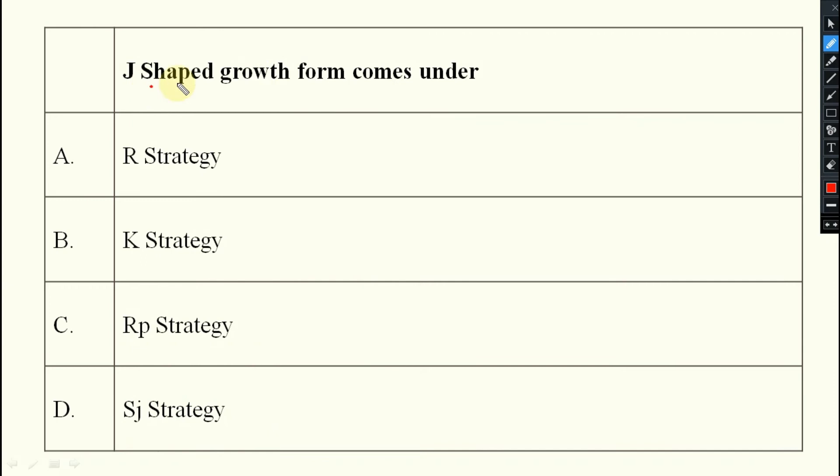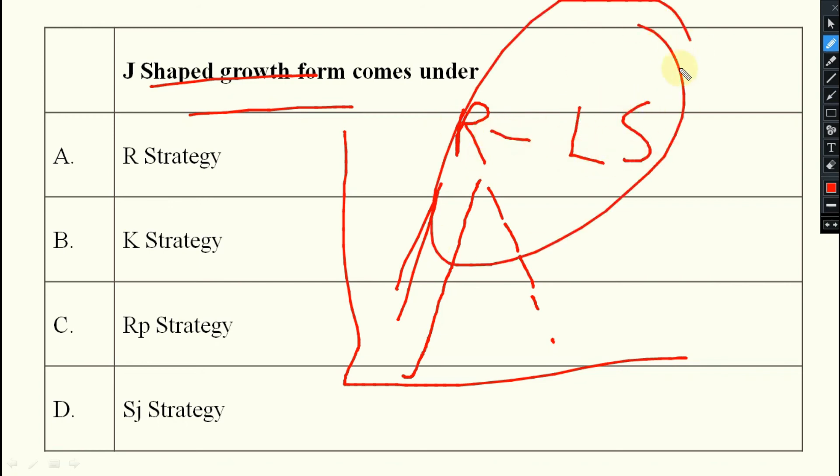J-shaped growth form comes under which one? J-shaped, this is your J-shaped. So here what will happen? High reproductive rate and low survival rate. So what will be the answer? R strategy. That is known as your R strategy.